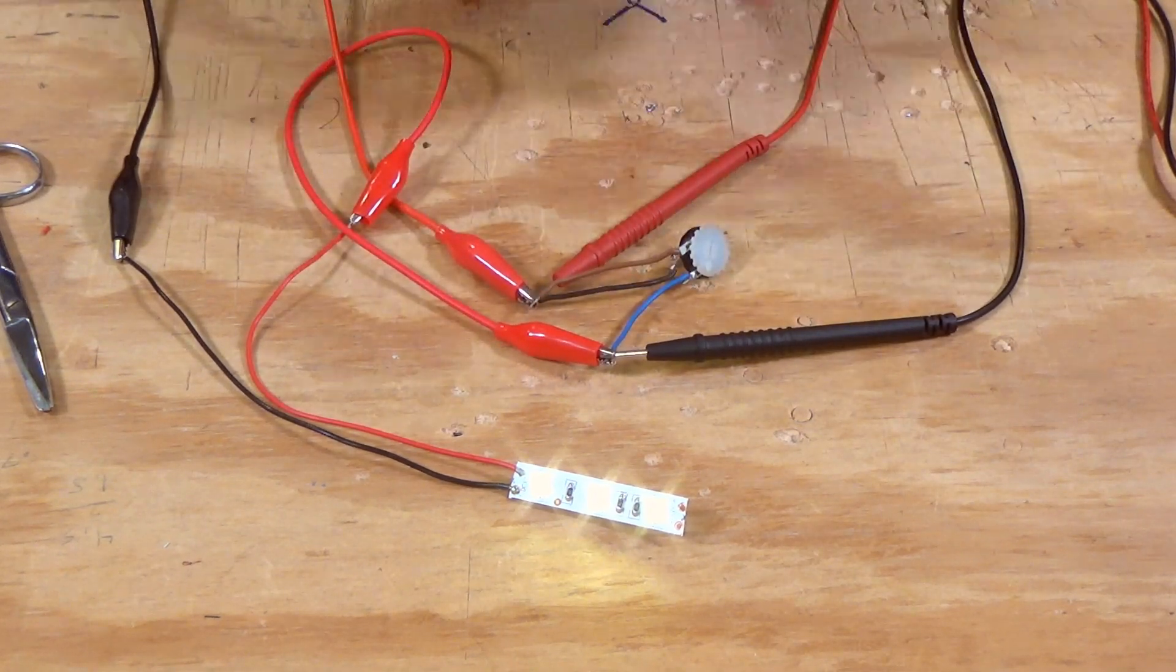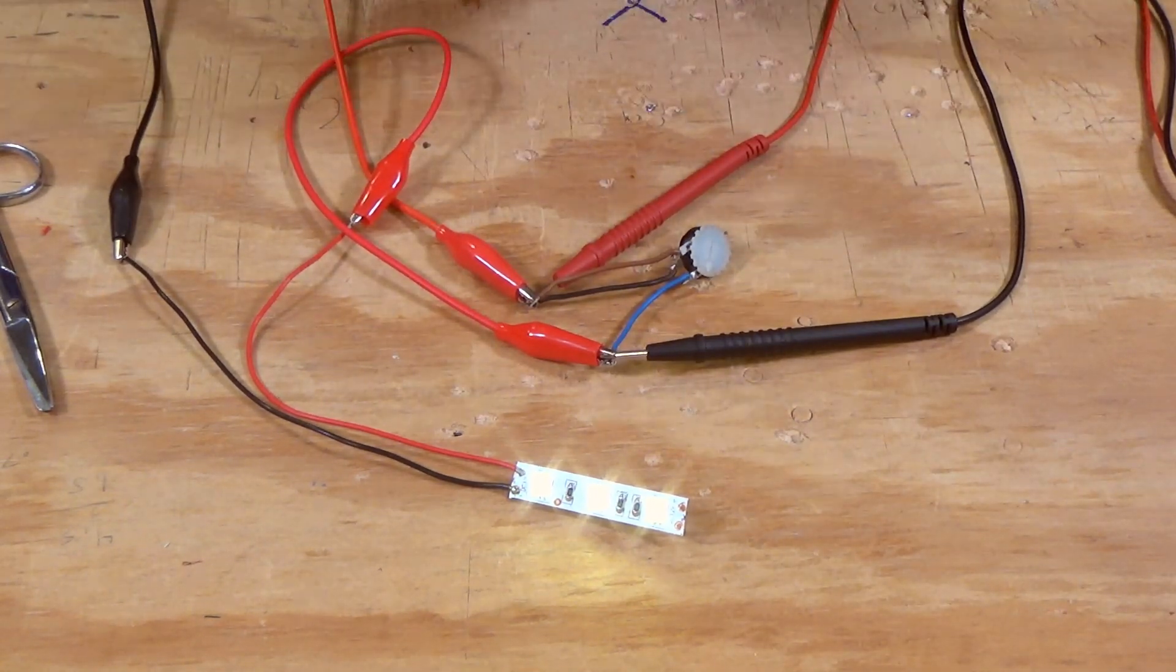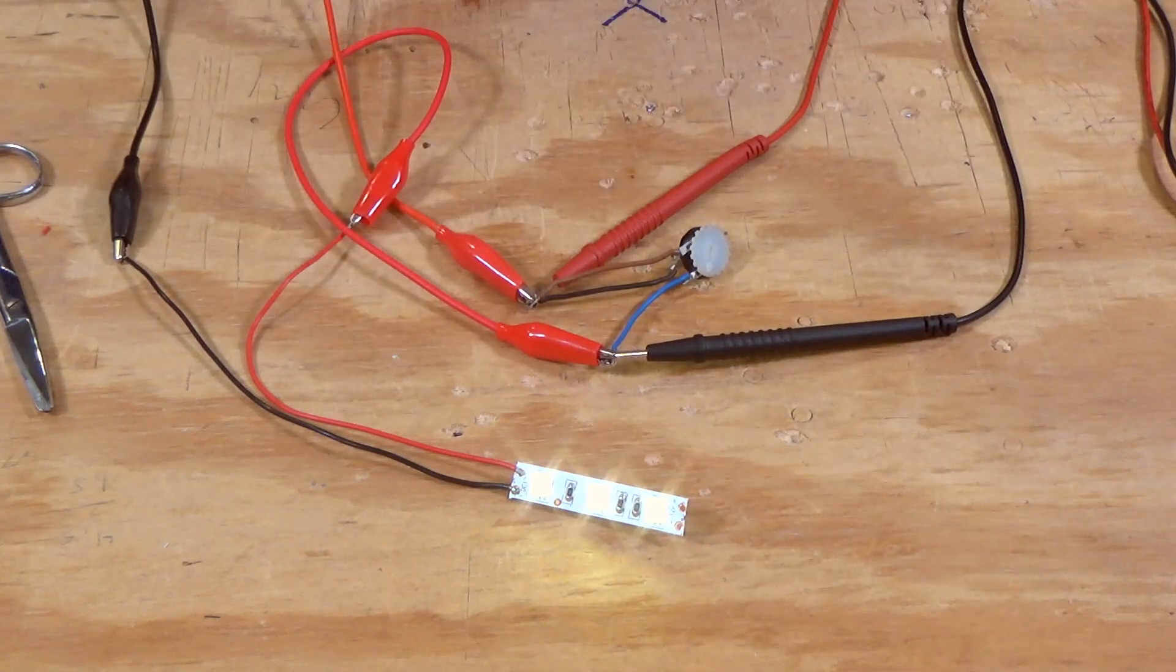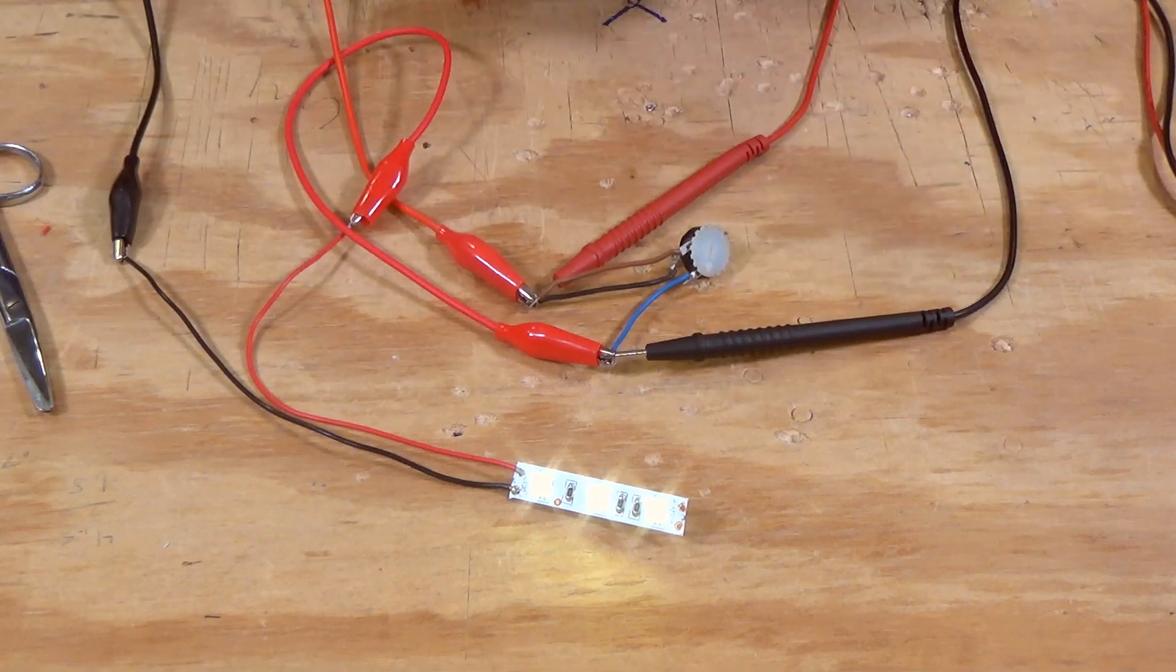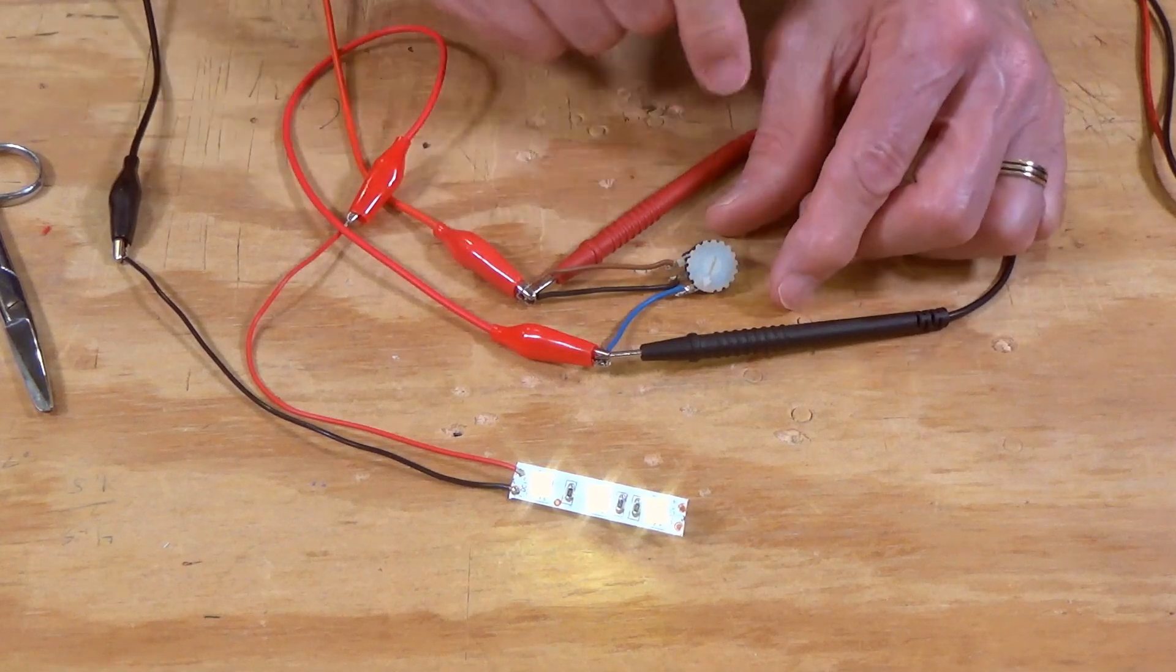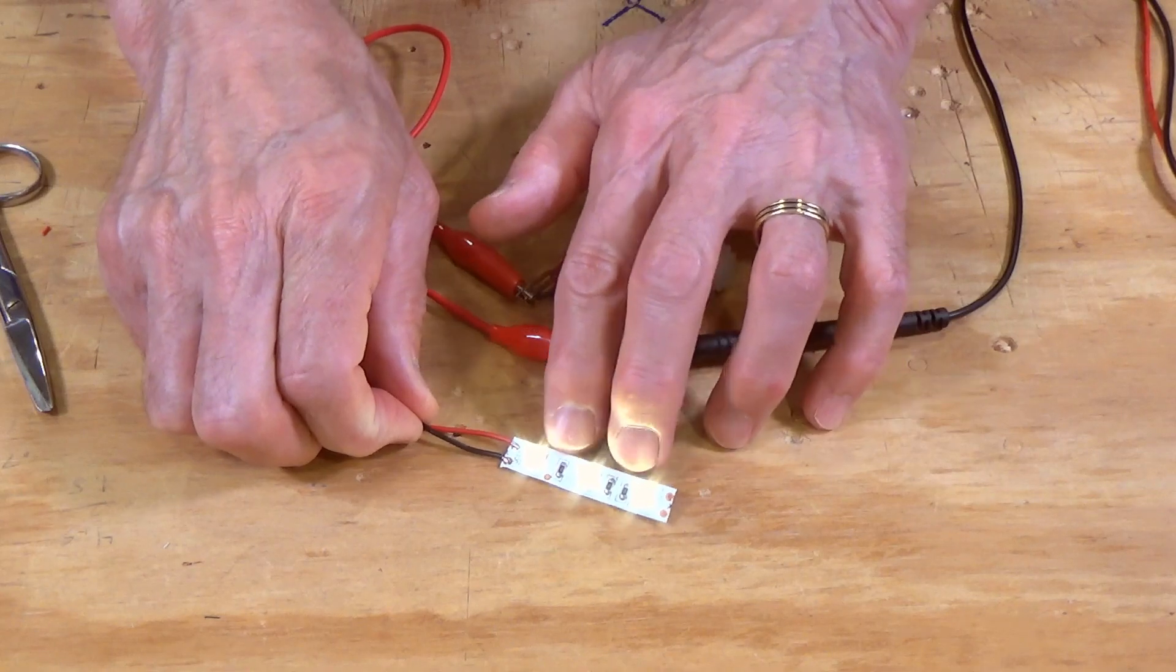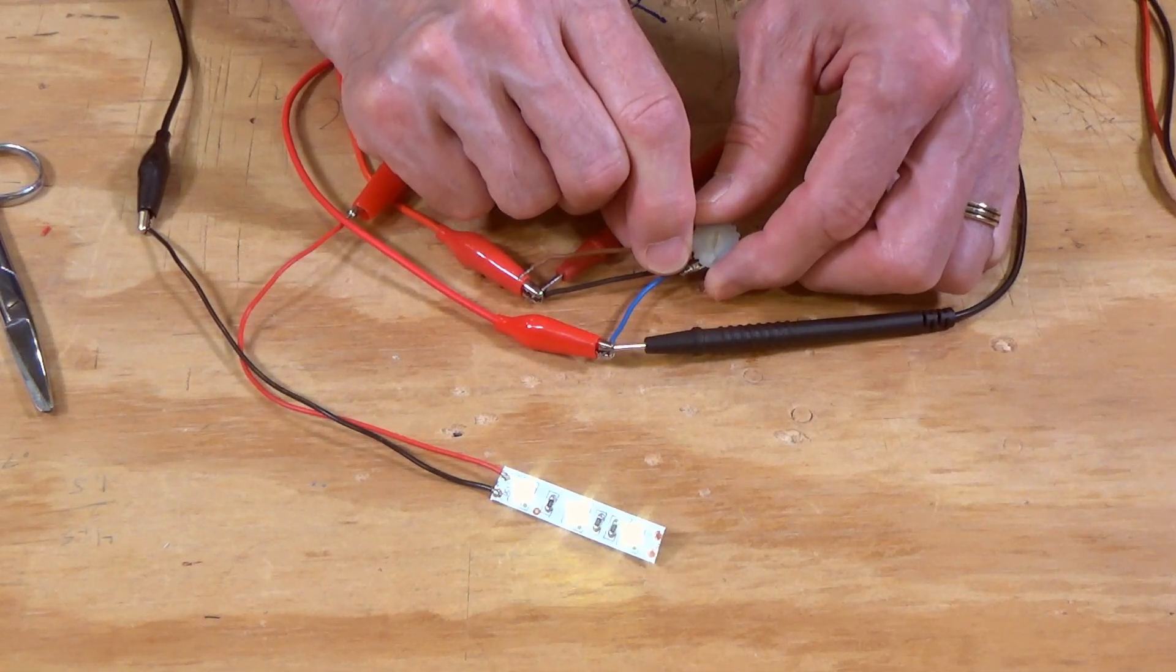What you can do is go to allelectronics.com and get a zero to 10,000 ohm potentiometer like this one. They're called a trim pod or a trim potentiometer, dial potentiometer—people have different names for these things, but they sell them in most electronic supply catalogs. Unfortunately Radio Shack's not around anymore. You can adjust the light strip to whatever intensity you want.